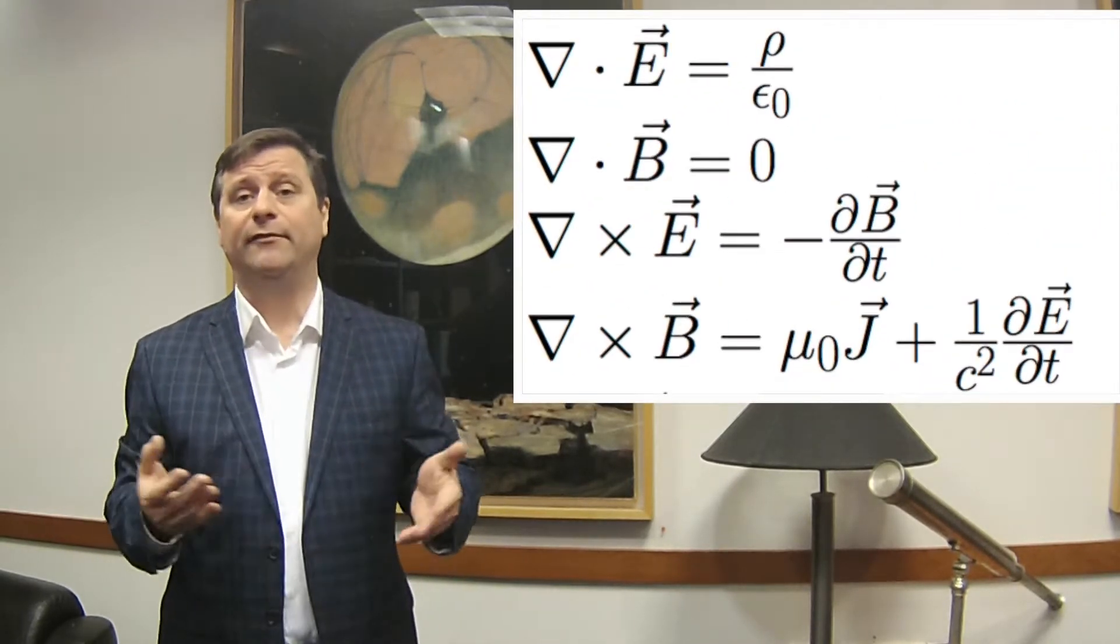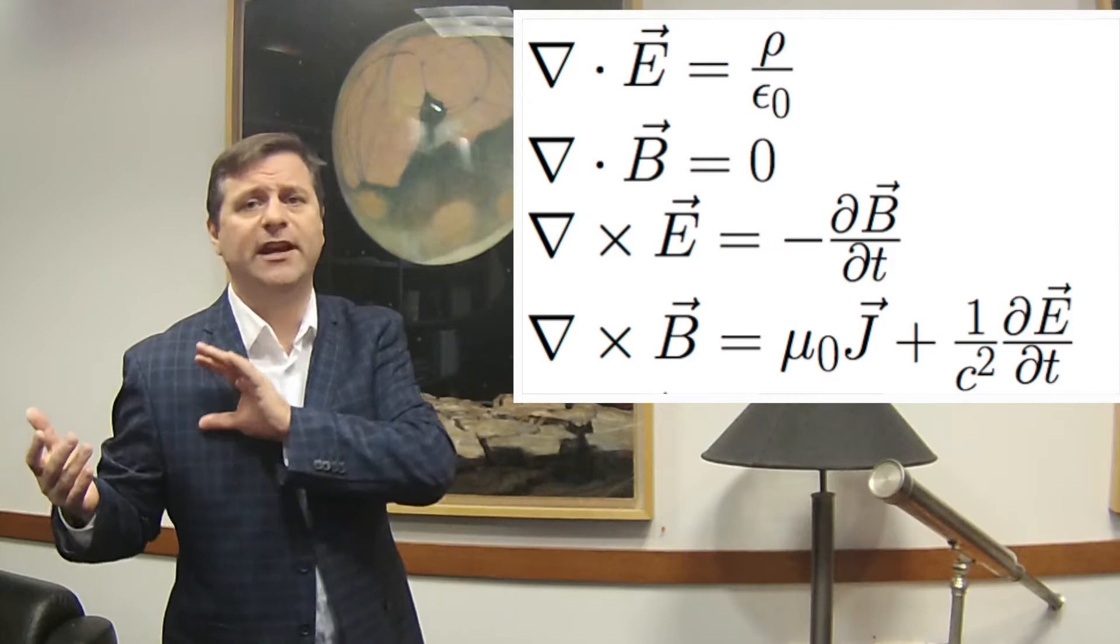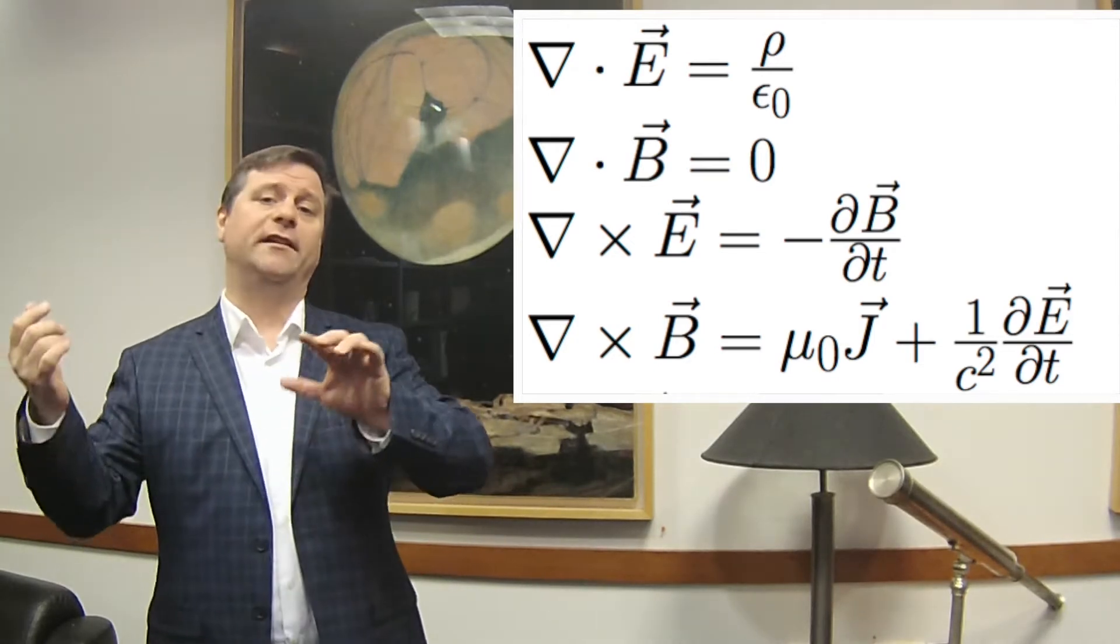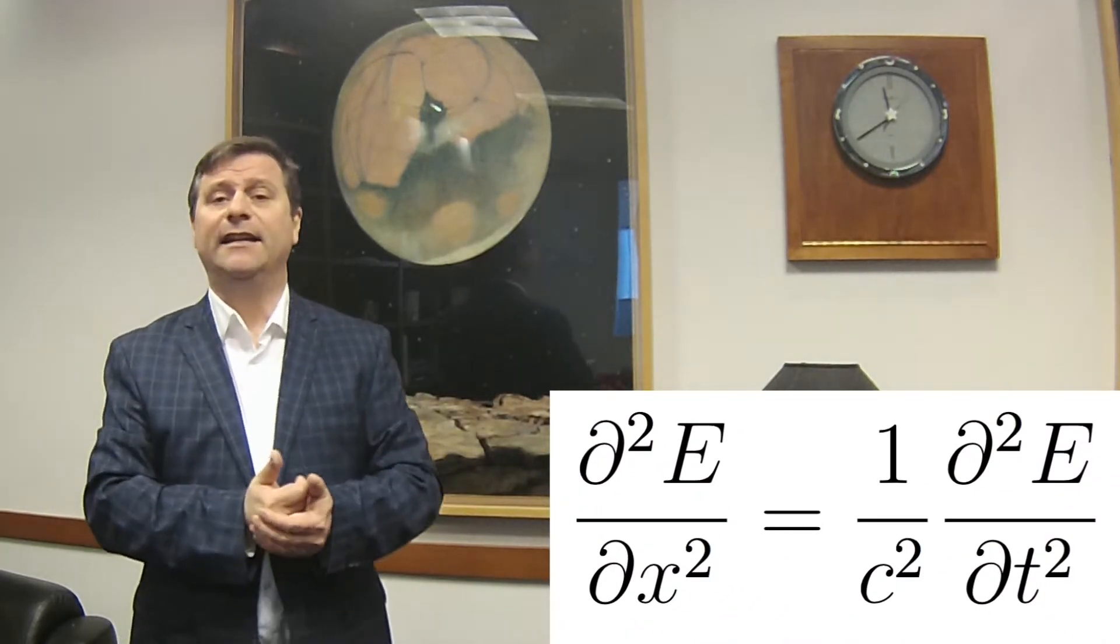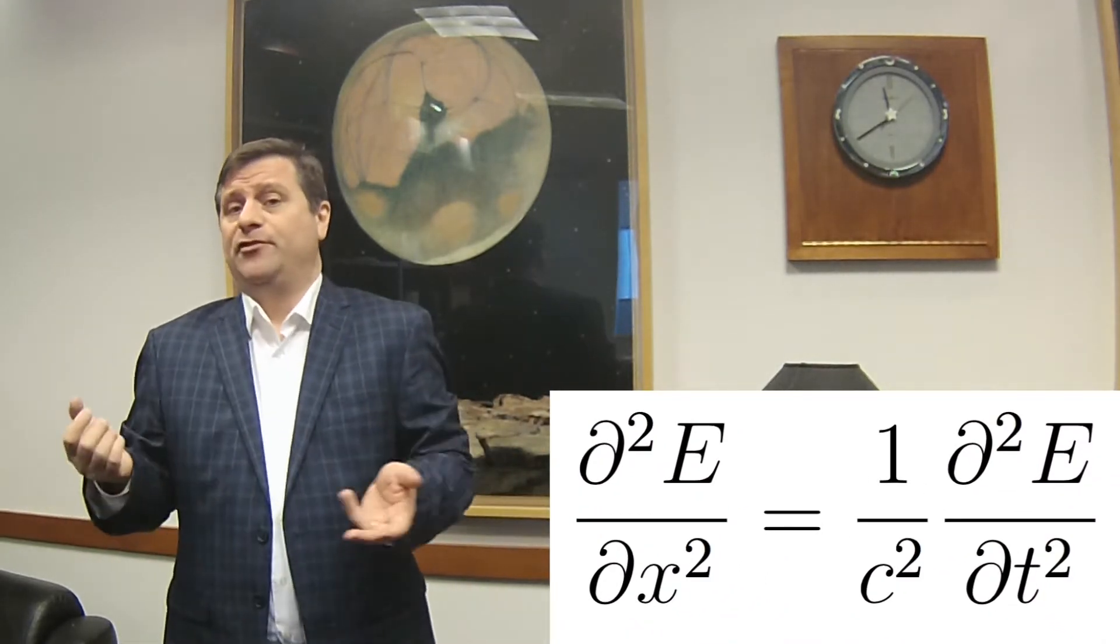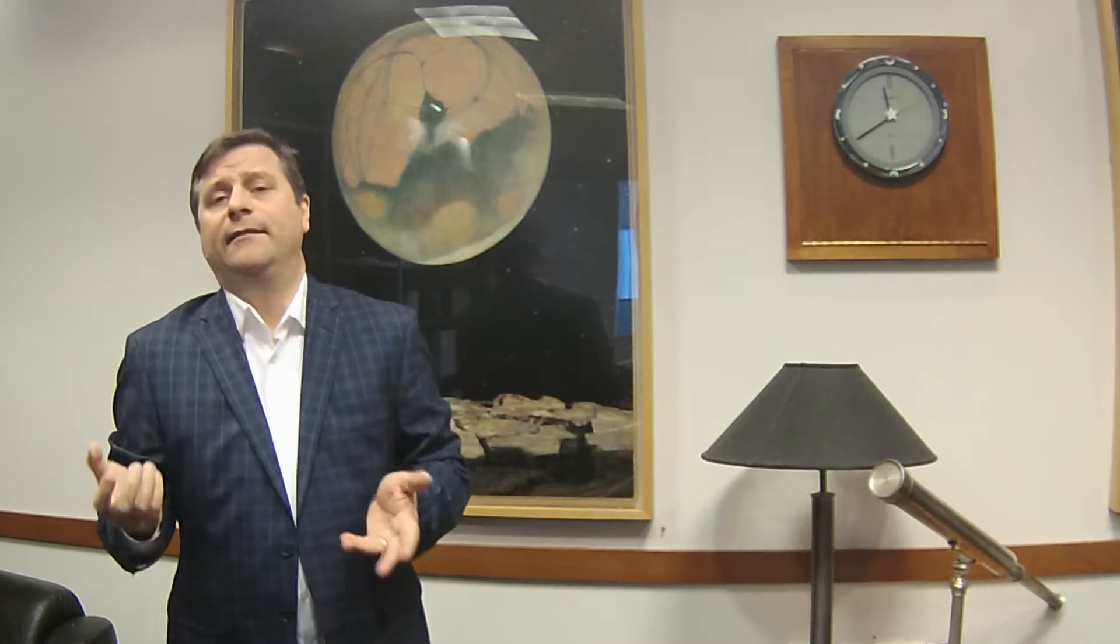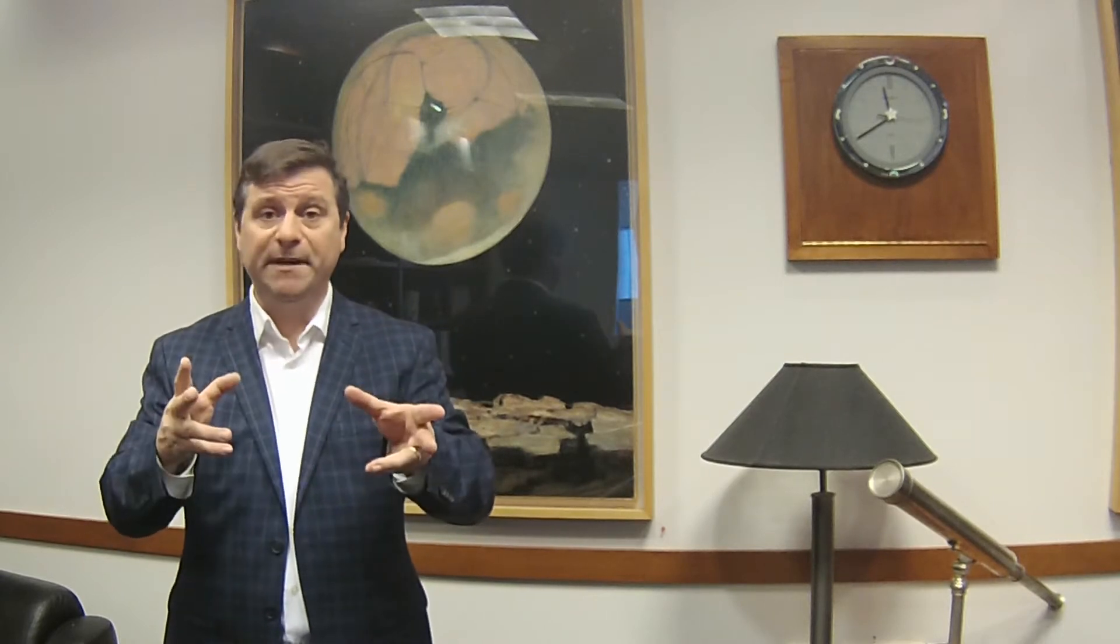Last time we ended up with James Clerk Maxwell's equations for electromagnetism and how they can be solved to show that light is actually a propagation of an electromagnetic wave. And that just determines that light can be any wavelength, any frequency. But the frequency and wavelength of light are related by the speed of light.